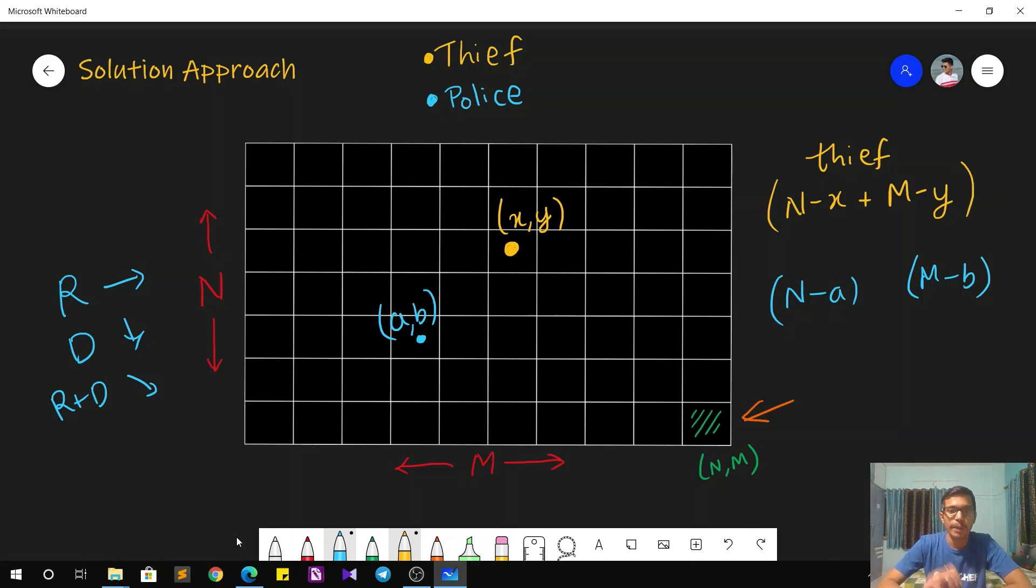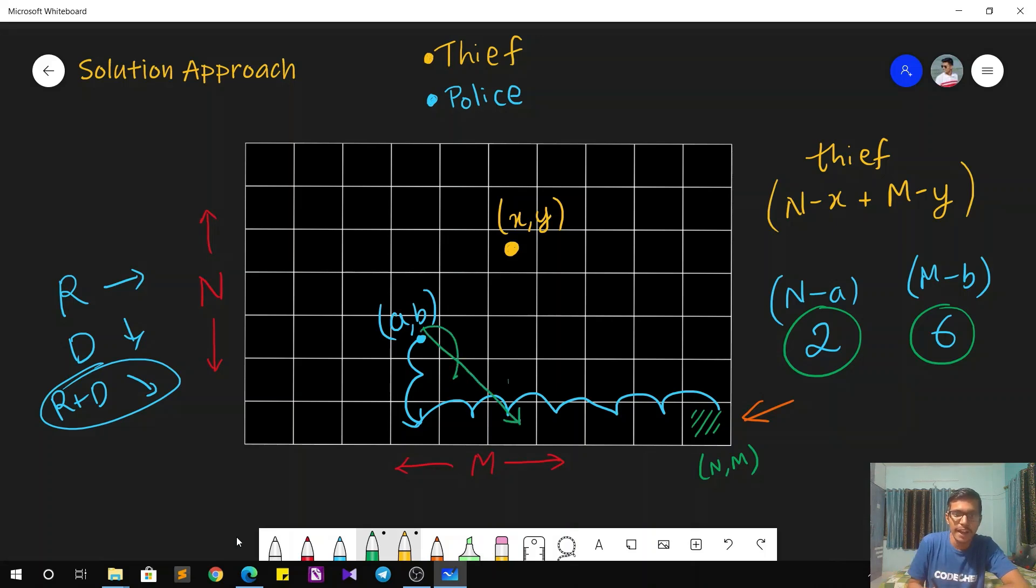But for a particular case, like in this case, the police has to make a total of two down moves and six right moves. In that case, what the police can do is to reach the target faster, he can use these type of moves, right plus down. How to do that? He will combine the minimum number from both. Instead of making two and six moves separately, he'll make two moves of the type right plus down, in diagonal fashion, and then he'll complete the remaining moves. So that is a faster way. He'll combine the down moves and the right moves to save some time and reach faster to the target position.